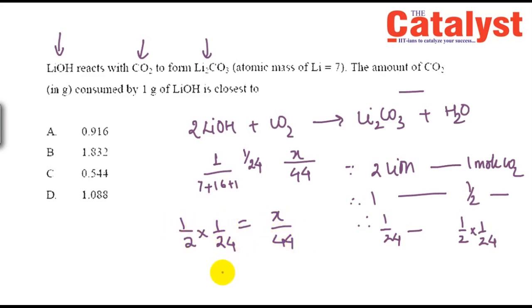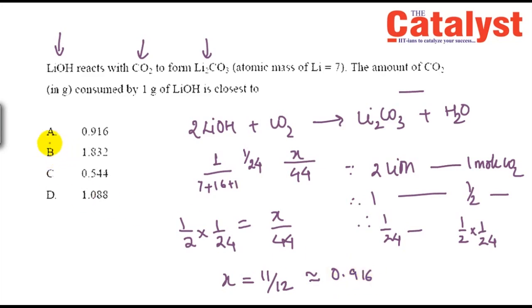Solving: (1/2) × (1/24) = x/44, giving x = 11/12, which is approximately 0.916. The answer is option A.